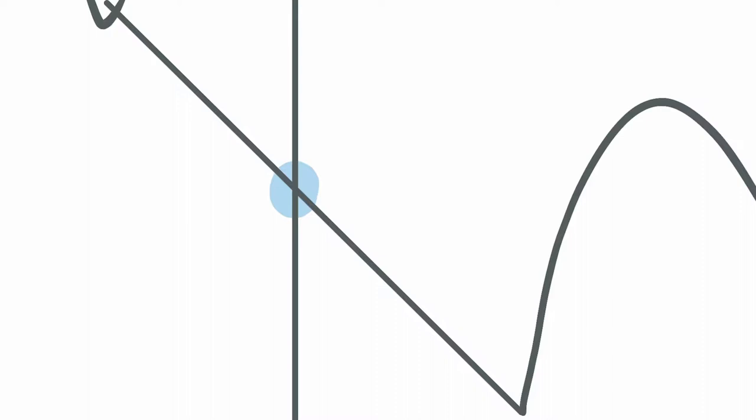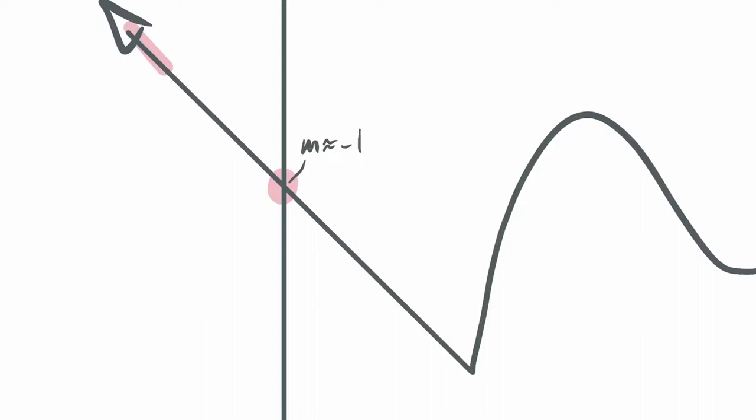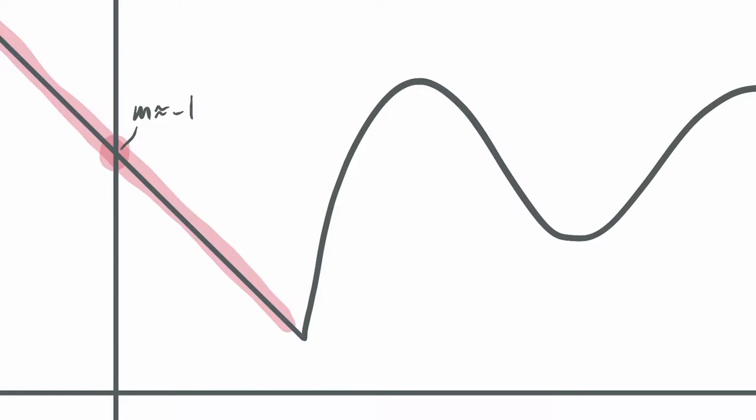It's like a straight line — I can tell it's a negative slope. Specifically, I think this would be a slope of negative one. Here, the slope looks to be about negative one. That's true for the entire section.